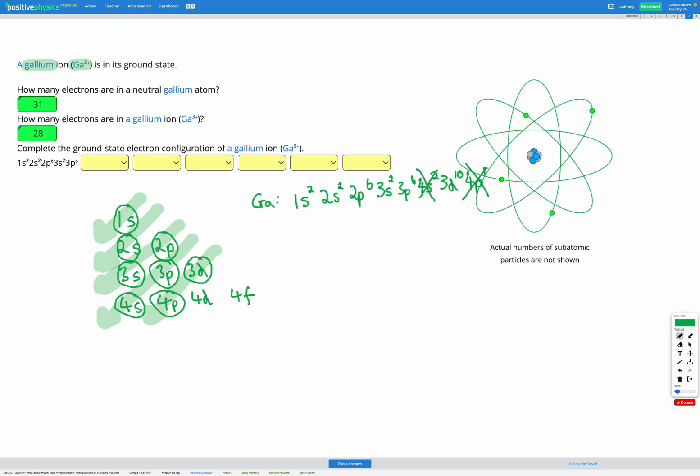We're actually left with 3d¹⁰, that being a full energy sublevel, and the 4s² and 4p¹ are going to be empty. This turns out to be a more stable electron configuration than if we remove them from the 3d¹⁰.